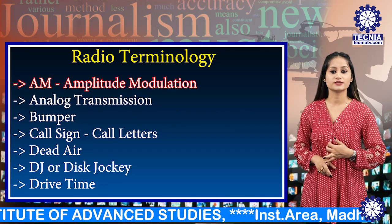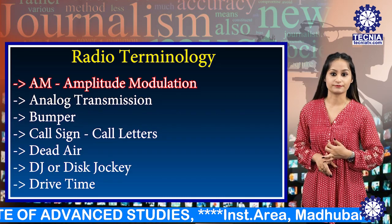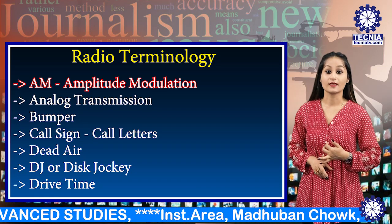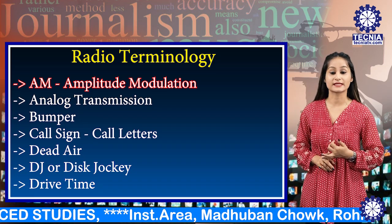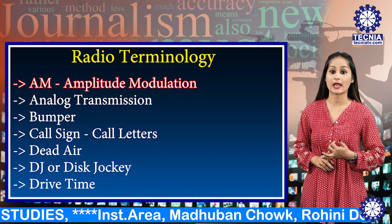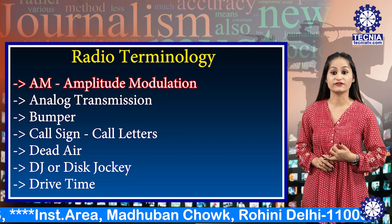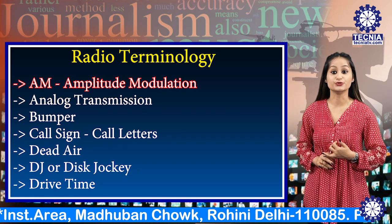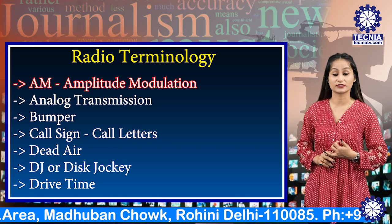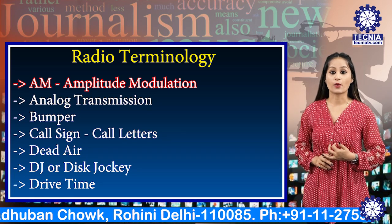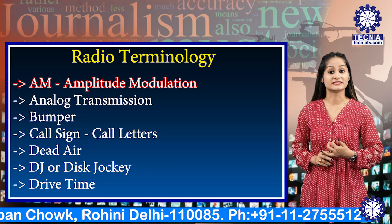Next terminology is AM — amplitude modulation. This broadcast signal varies the amplitude of the signal waves. It is used by AM broadcast stations and requires an AM receiver.